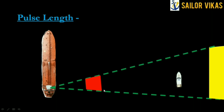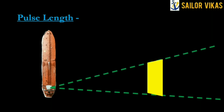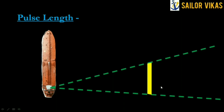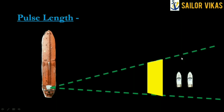This is how the pulse travels and how the echo gets received. Now, pulses are of two types: short pulse and long pulse. This is what a long pulse looks like, and this is what a short pulse looks like — you can see the difference in their lengths.